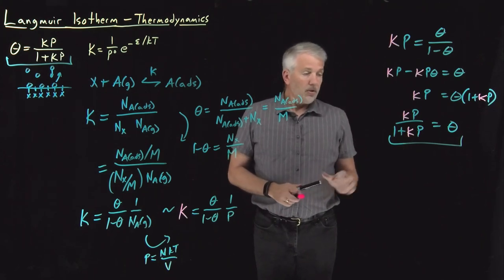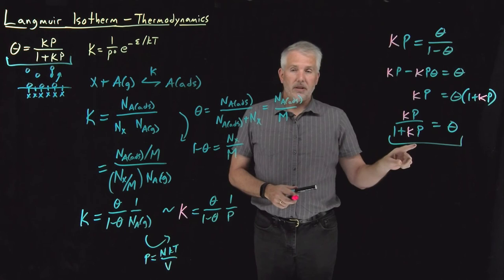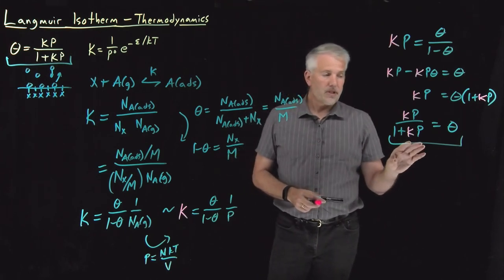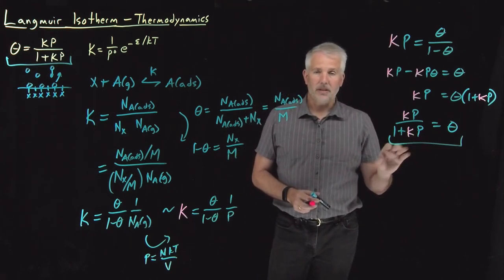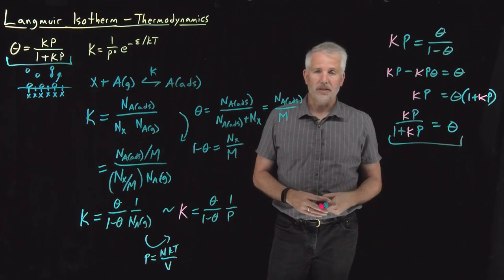All right, so we've seen two different ways of obtaining the same equation, this Langmuir isotherm equation. It turns out there's yet a third way to look at the equation, and that's what we'll do next is take a look at that third way.